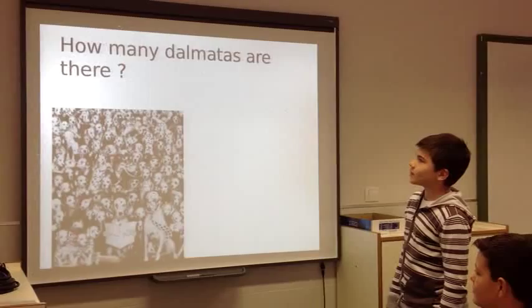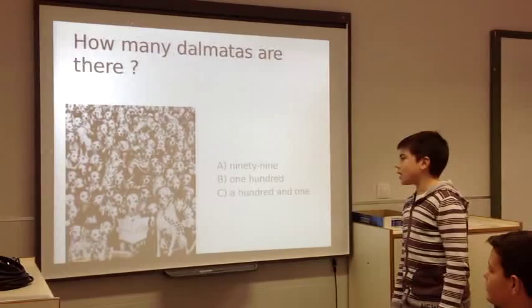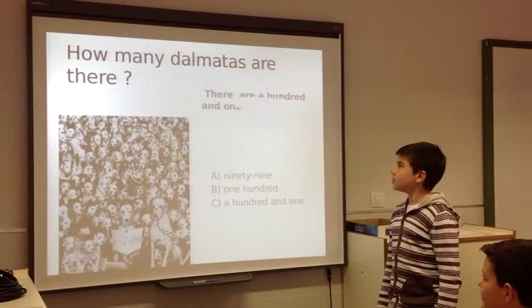How many dalmatians are there? A. 99. B. One hundred. Or C. A hundred and one. A hundred and one. There are a hundred and one.